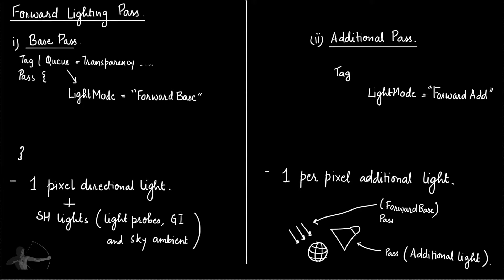And after that, we saw that there are two passes in the forward rendering or the forward lighting. One is the base pass and another is the additional pass.